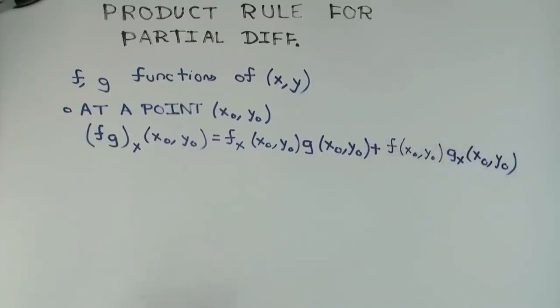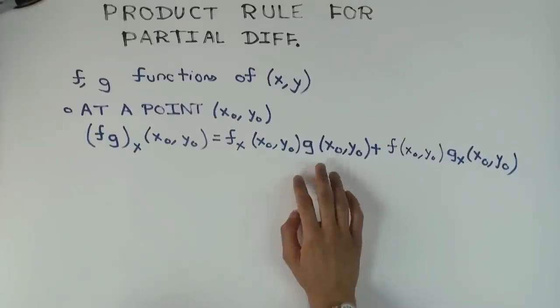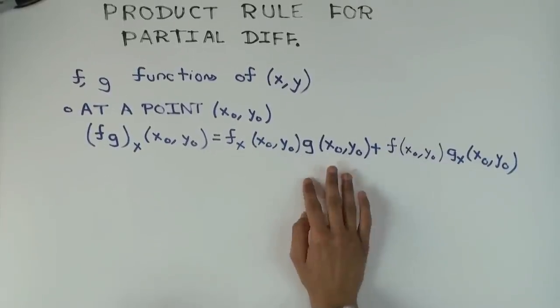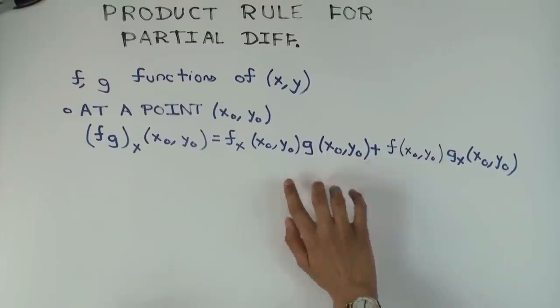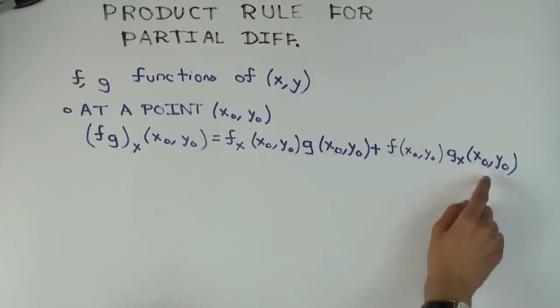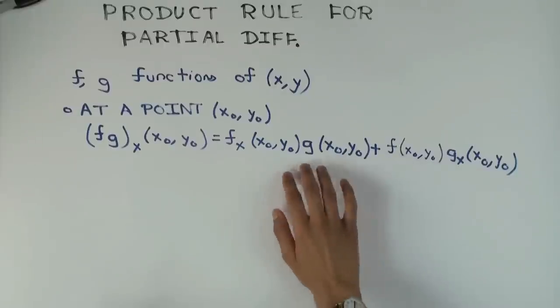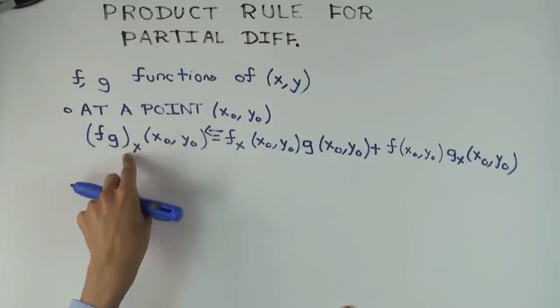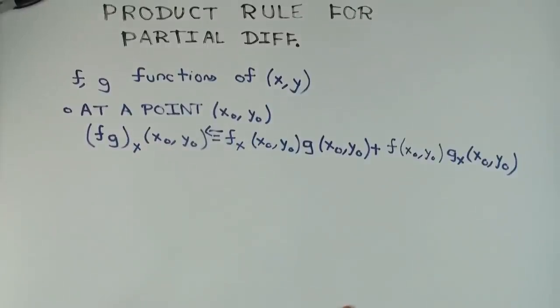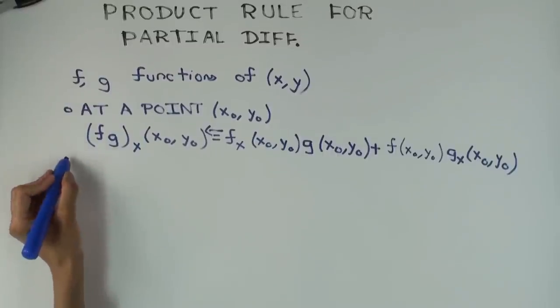And now this is just a statement. Now, there's also a conditional aspect to it. What would the conditional statement be? It would say that if the right side exists, so does the left side. What do you need for the right side to exist? Well, you need that f and g are both defined at the point, f sub x is defined, and g sub x is defined. If all these four numbers are defined, then the left side, f times g, is also differentiable at the point, and the derivative is given like this.